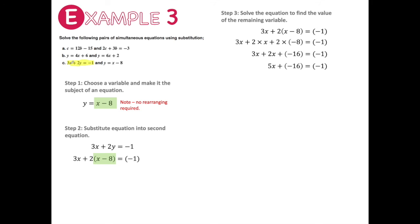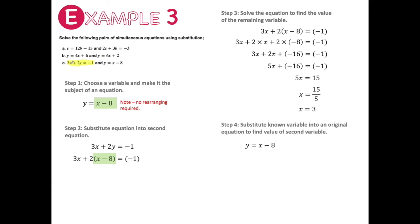Adding 16 to both sides: 5x equals 15, so x equals 3. Now that I've got a value for x, I substitute into y equals x minus 8: y equals 3 minus 8, which gives y equals negative 5. The answer is x equals 3, y equals negative 5. That's some examples of how to use the substitution method to solve simultaneous equations algebraically.